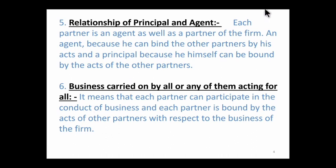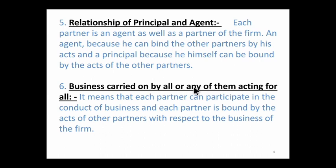Each partner is an agent as well as a partner of the firm. He can act like an employee and also like an owner. He is an agent because he can bind the other partners by his acts. The definition says 'business carried on by all or any of them acting for all,' meaning each partner can participate in the conduct of business, and each partner is bound by the acts of other partners with respect to the business of the firm.